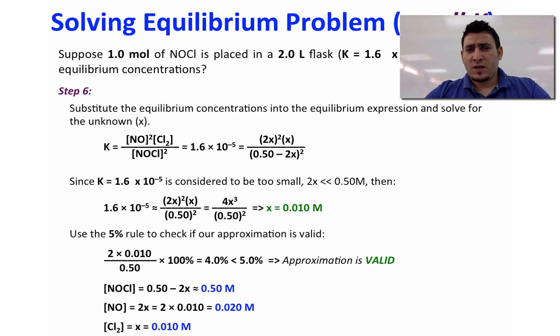So now using the value of X we can find the equilibrium concentrations of NOCl, NO and Cl2. So the concentration of NOCl will remain unchanged so 0.50. The concentration of NO is going to be equal to 0.020 since it's equal to 2x, and the concentration of Cl2 is going to be equal to 0.010.